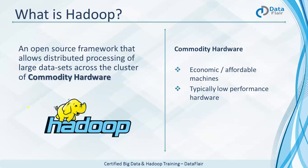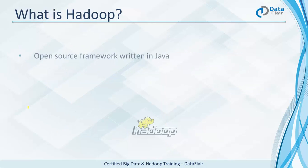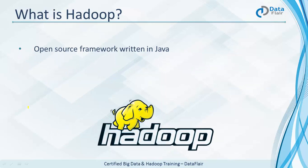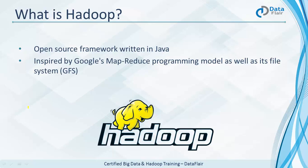Overall, Hadoop is an open source framework that can process data on commodity hardware — it doesn't need high-end hardware. Hadoop is written in Java and is inspired by Google's MapReduce programming model as well as Google's file system. Let's talk about this in the history section.